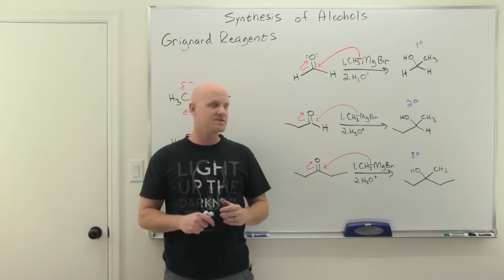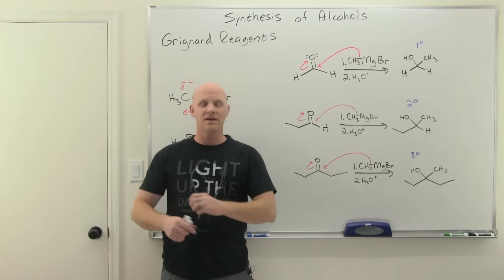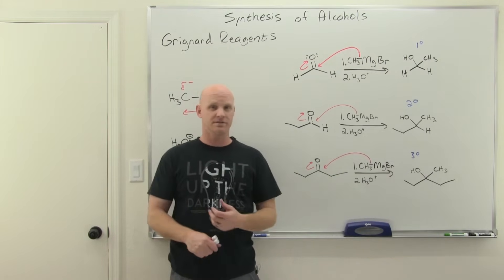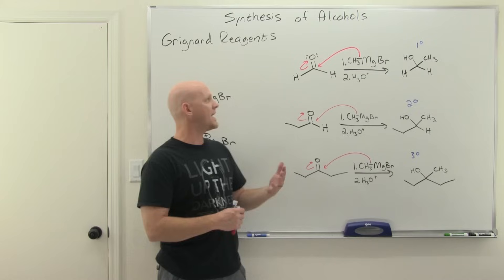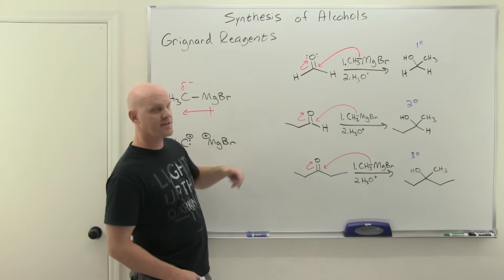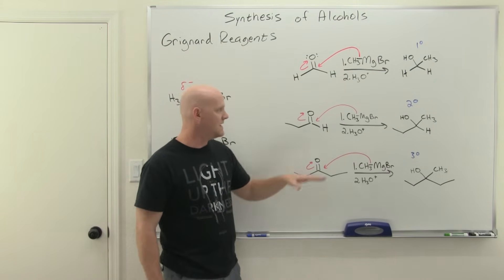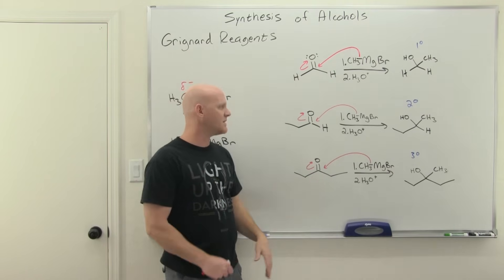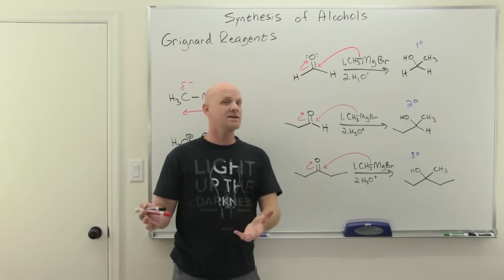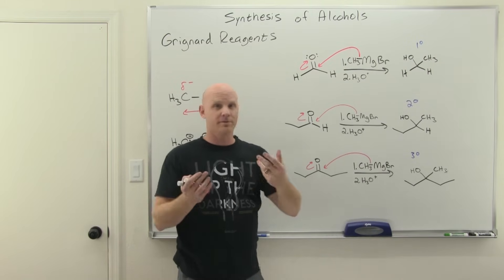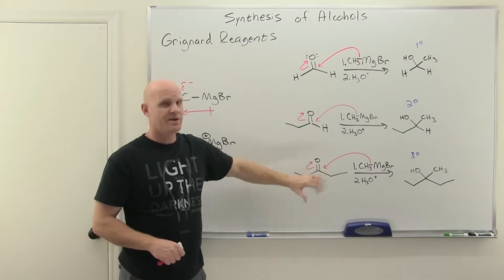Grignard reagents are strong bases and strong nucleophiles — critically important for synthesis. Like lithium aluminum hydride, Grignard reagents are not compatible with protic solvents. You can't mix a Grignard with anything protic — not a protic solvent, and not a reactant that has a protic group like an alcohol on it. Otherwise the Grignard will act as a base instead of a nucleophile. These reactions are typically carried out in diethyl ether or THF, both aprotic solvents.